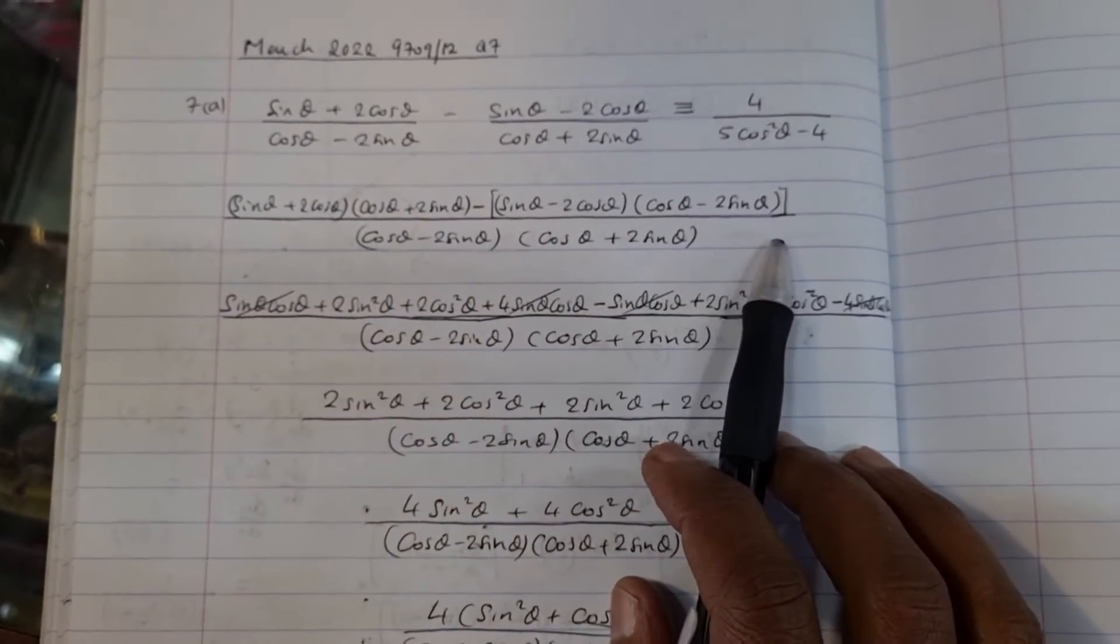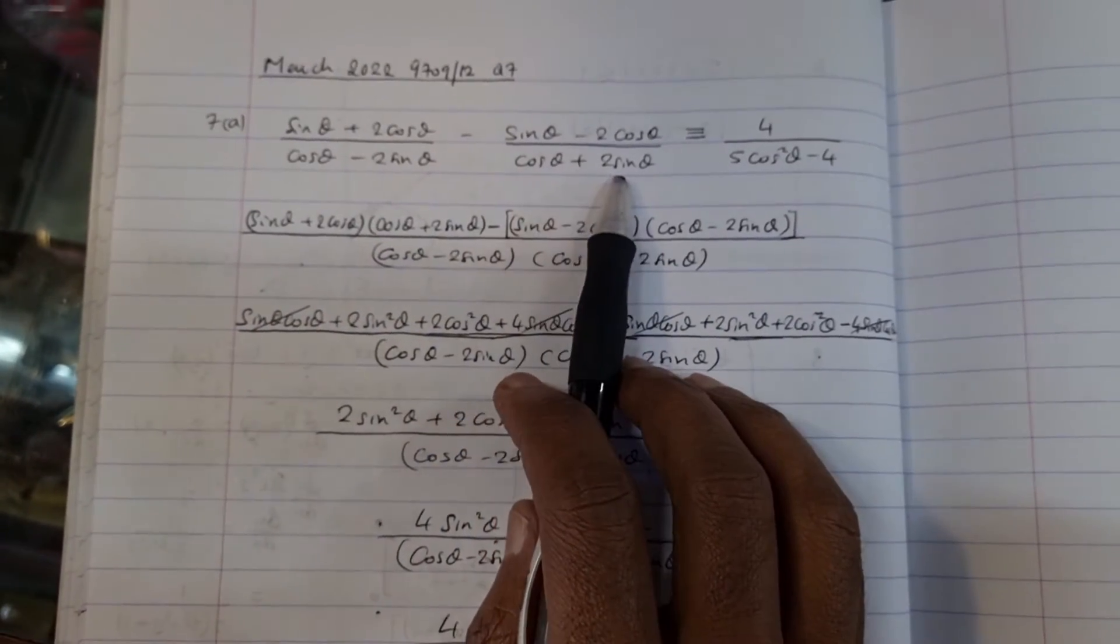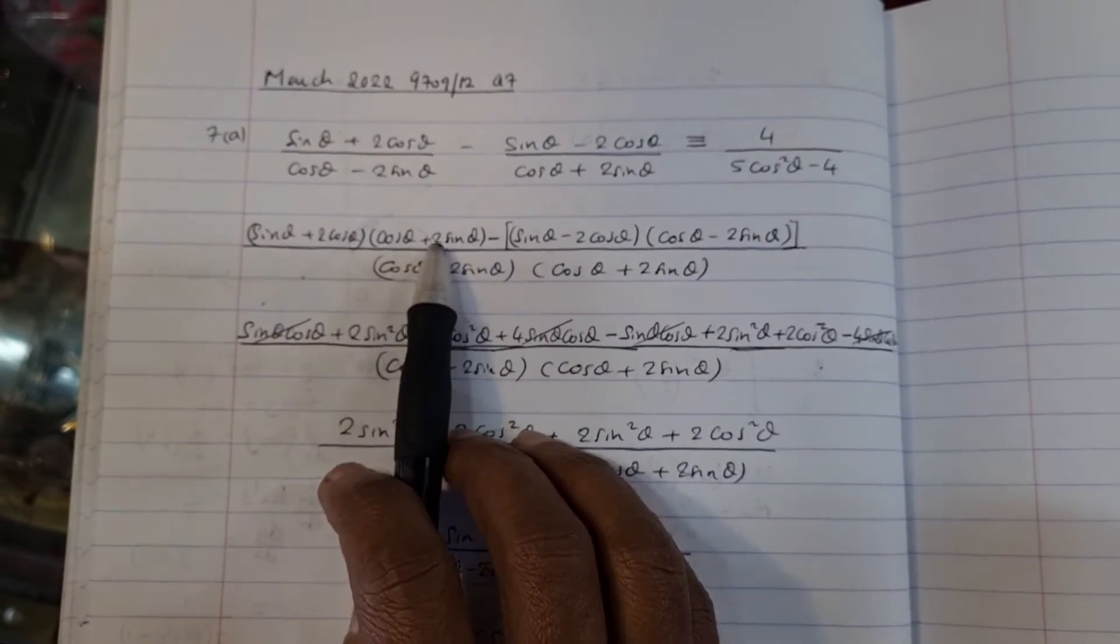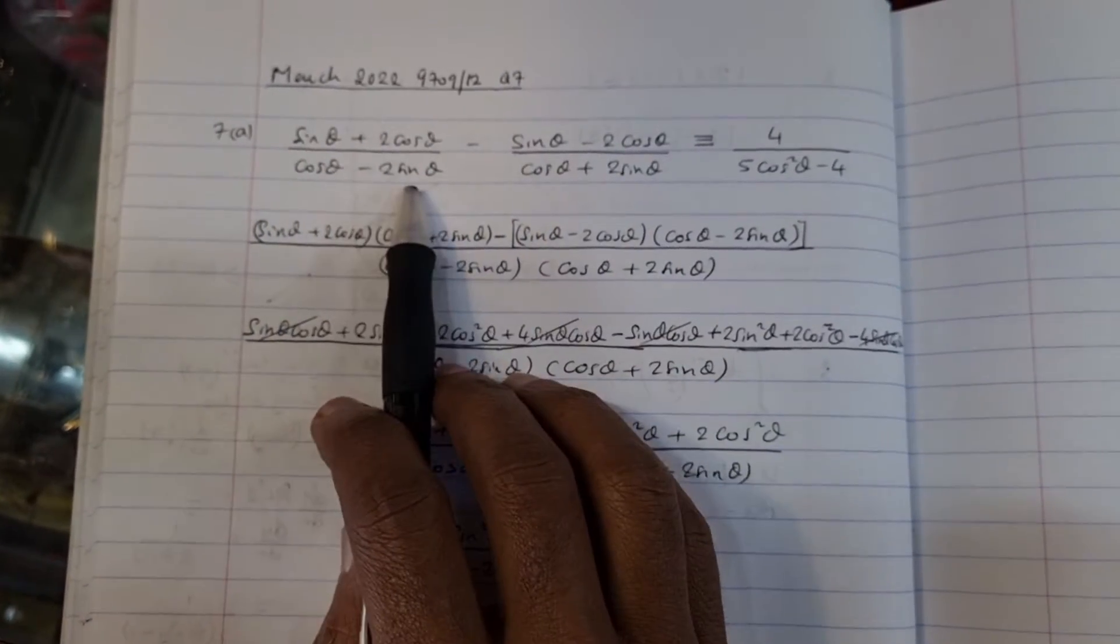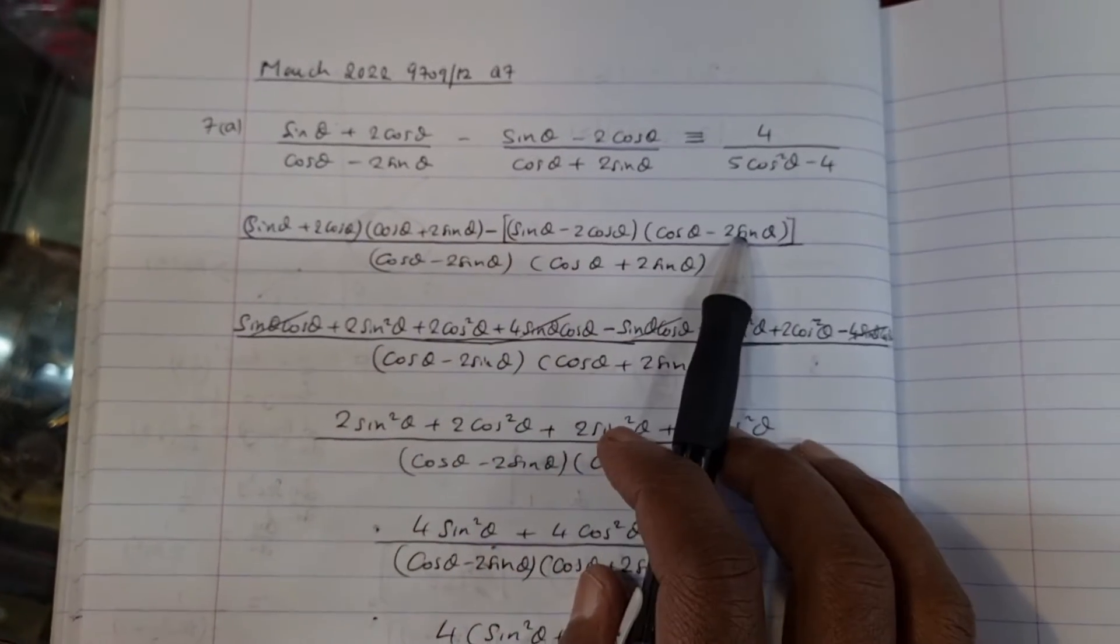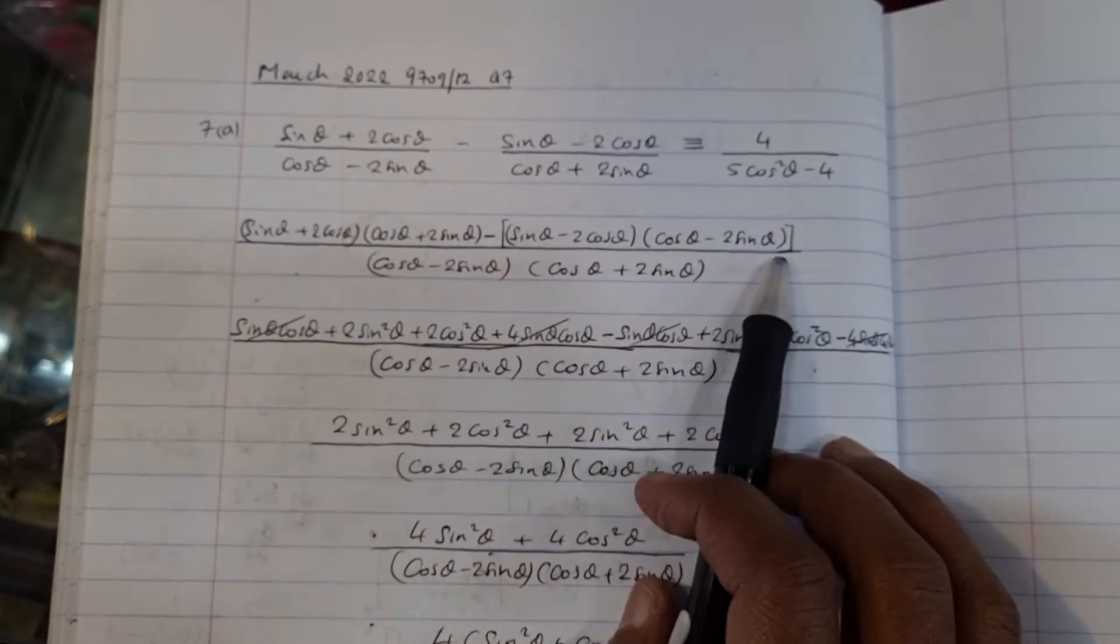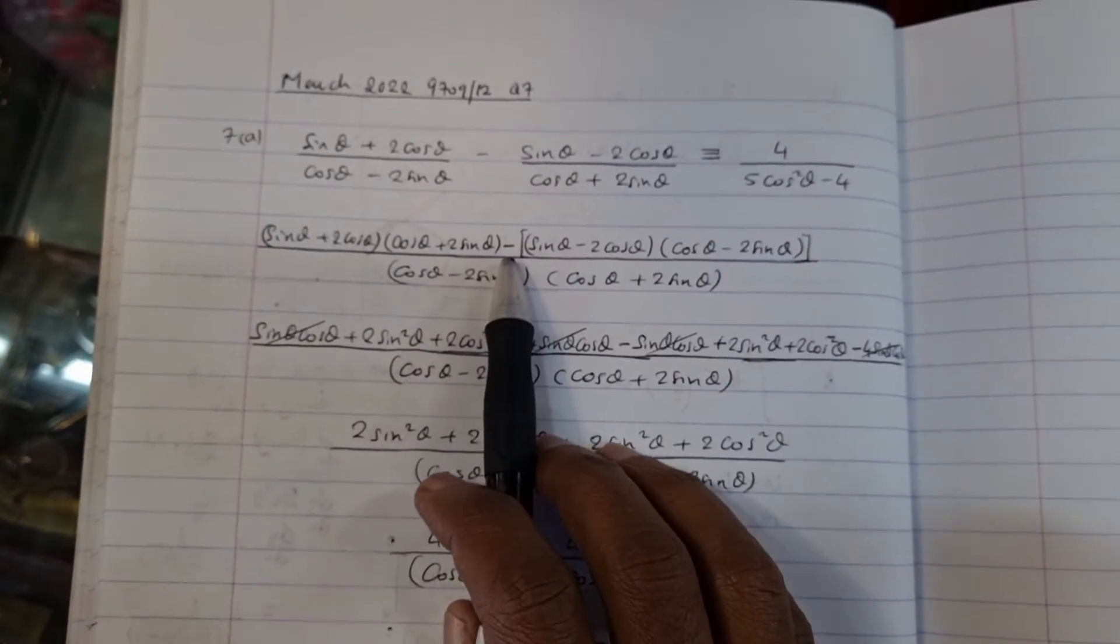By cross-multiplying, we get this expression now. So this is cos θ plus 2 sin θ multiplied by this, and you get those two. And this lot against that lot, you get this one. But be careful to put a bracket there, a pair of brackets, and then put a subtraction here.